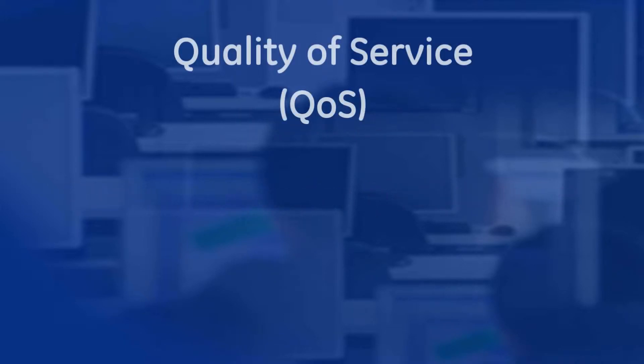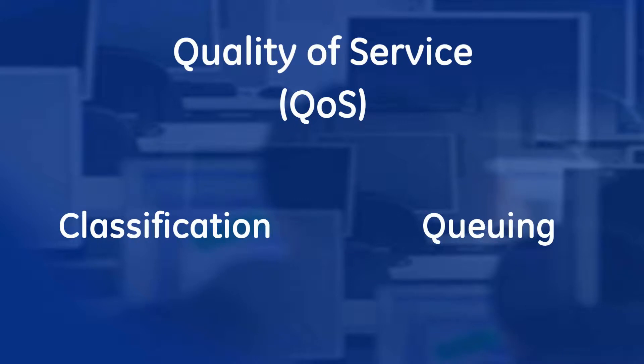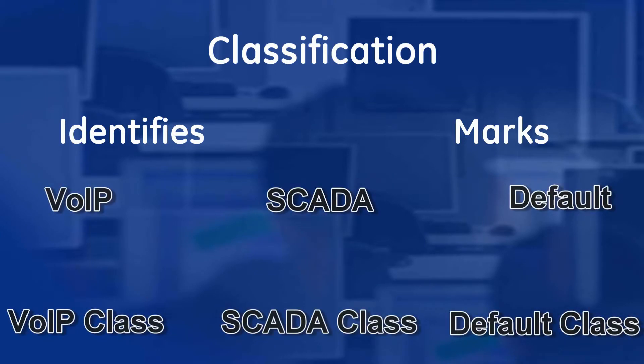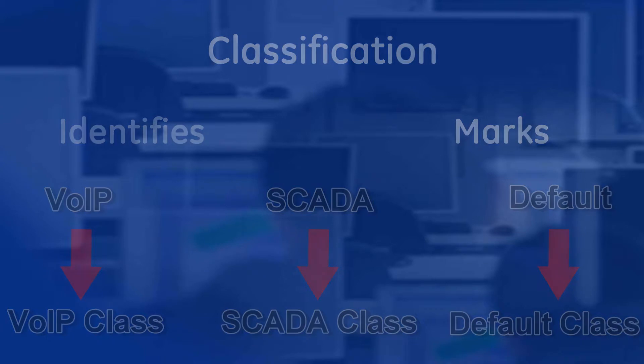Quality of Service is comprised of two functions: Classification and Queuing. Classification identifies and marks traffic to be placed into appropriate classes or sub-queues. For example, VoIP traffic can be marked for a VoIP class, SCADA traffic can be marked for a SCADA class, and so on.